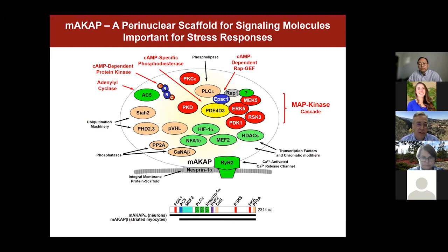MAKA-cap has been described mainly in cardiac myocytes but is also present in other striated myocytes and neurons. It is a large scaffold of about 2,300 amino acids that binds a plethora of signaling molecules. It came to our attention in the retinal ganglion cell because MAKA-cap binds many molecules related to cyclic AMP-PKA signaling, as well as MAP kinase signaling, making it a candidate scaffold for organizing neuroprotective signaling.